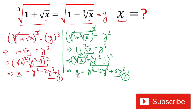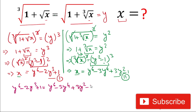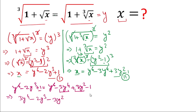From both equations we have the value of x, so we equate them. Equation 1 right-hand side: y^6 minus 2y cubed plus 1 equals equation 2 right-hand side: y^6 minus 3y^4 plus 3y squared minus 1. The y^6 terms cancel. Rearranging, we get: 3y^4 minus 2y cubed minus 3y squared plus 2 equals 0.